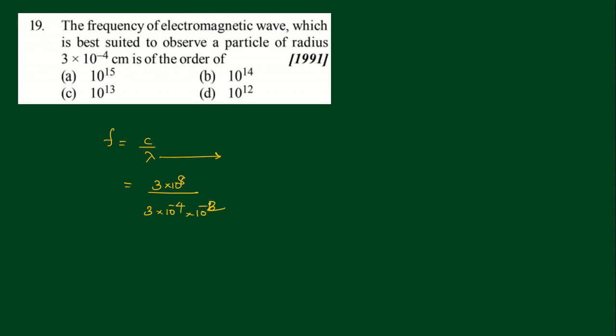For the calculation, we have 10 to the power of minus 2, and multiply them. 3 cancels, 10 to the power of 8 divided by 10 to the power of minus 6, approximately 10 to the power of 14. So option 2 is the answer.